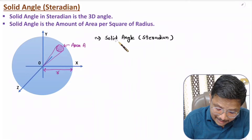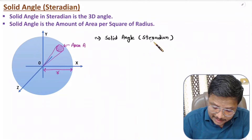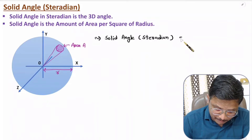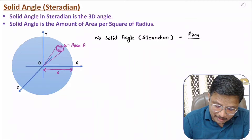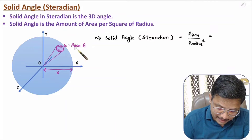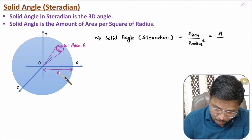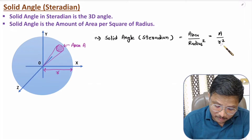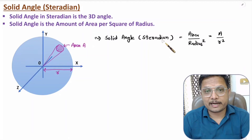So solid angle is calculated in form of steradian, and it equals area divided by radius squared. If area is A and radius is r, then A divided by r² gives the solid angle in steradian.